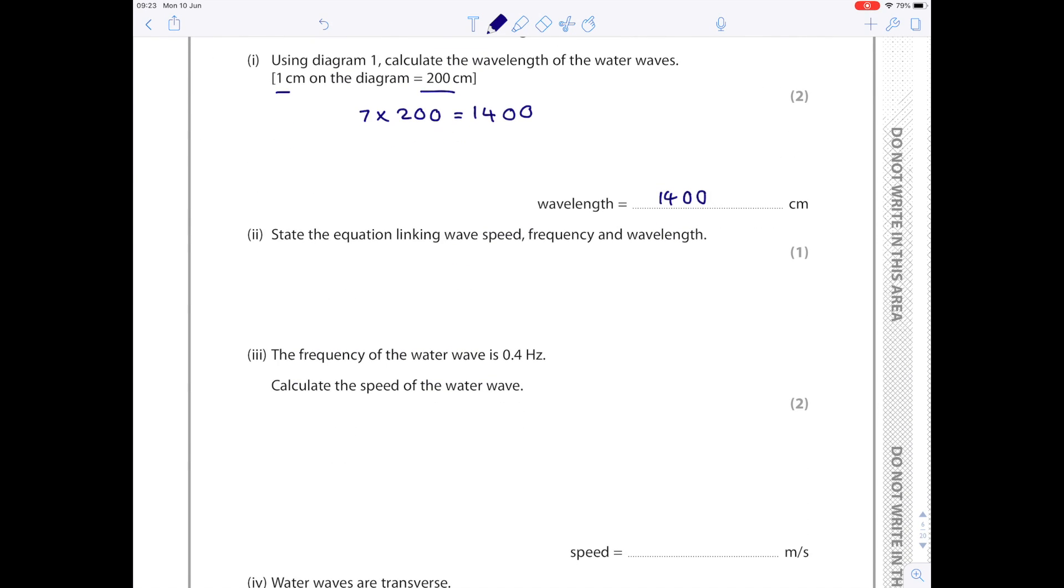State the equation linking wave speed, frequency, and wavelength. Over here I'm going to show my formula triangle. Remember you need to write it out. Here is your final answer. The frequency of the wave is 0.4 Hertz. Calculate the speed of the water wave. Writing out the equation again, we know that the frequency is 0.4 Hertz. The wavelength we've just calculated is 1400.